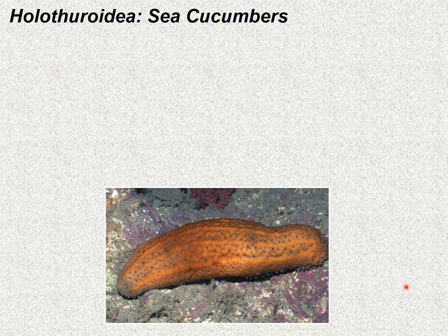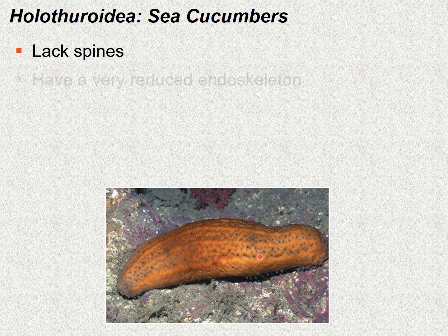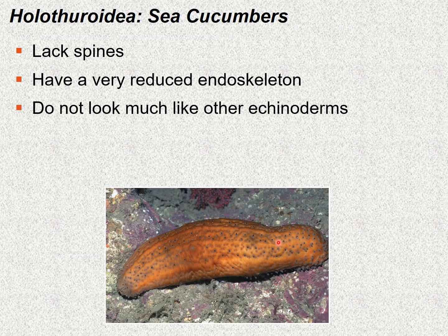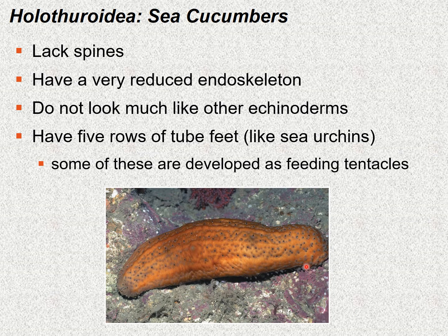Holothuroidea include the sea cucumbers, which are very different from all other echinoderm groups. They do not have spines on their surface. They have a very reduced endoskeleton compared to the complex structures of the sea star. Their adult form is actually bilateral, as opposed to many other echinoderms. They also have five rows of tube feet, similar to sea urchins, and in some species these are developed as feeding tentacles, making them quite different from typical tube feet.